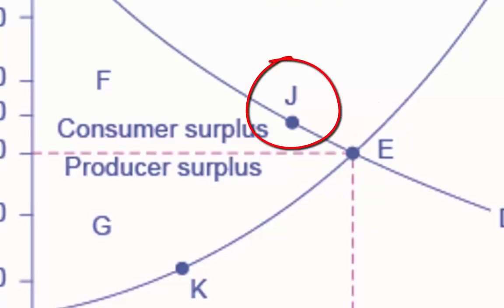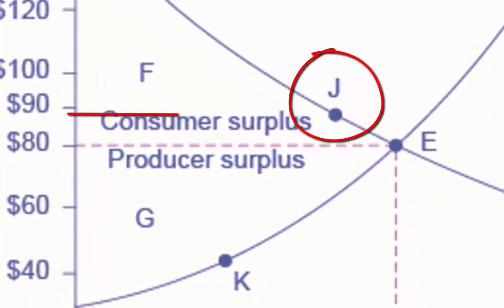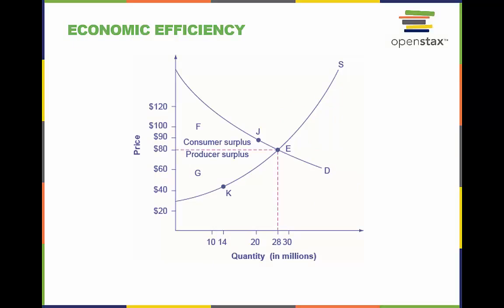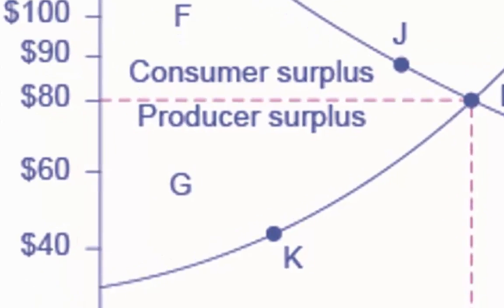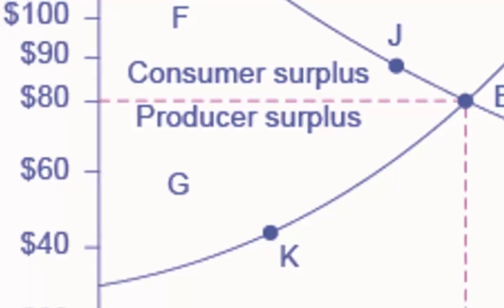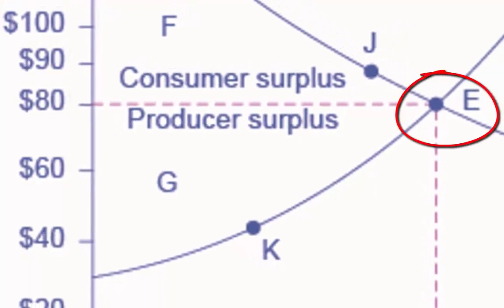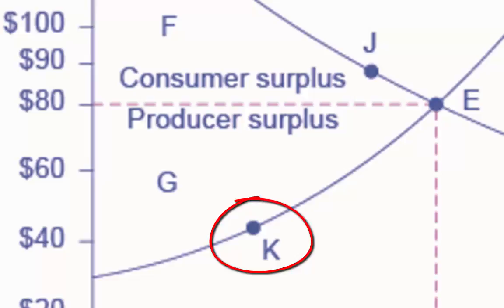Point J on the demand curve shows that even at the price of $90, consumers would have been willing to purchase a quantity of 20 million. The somewhat triangular area labeled by G shows the area of producer surplus, which shows that the equilibrium price received in the market was more than what many of the producers were willing to accept for their products. For example, point K on the supply curve shows that at a price of $45, firms would have still been willing to supply a quantity of 14 million.